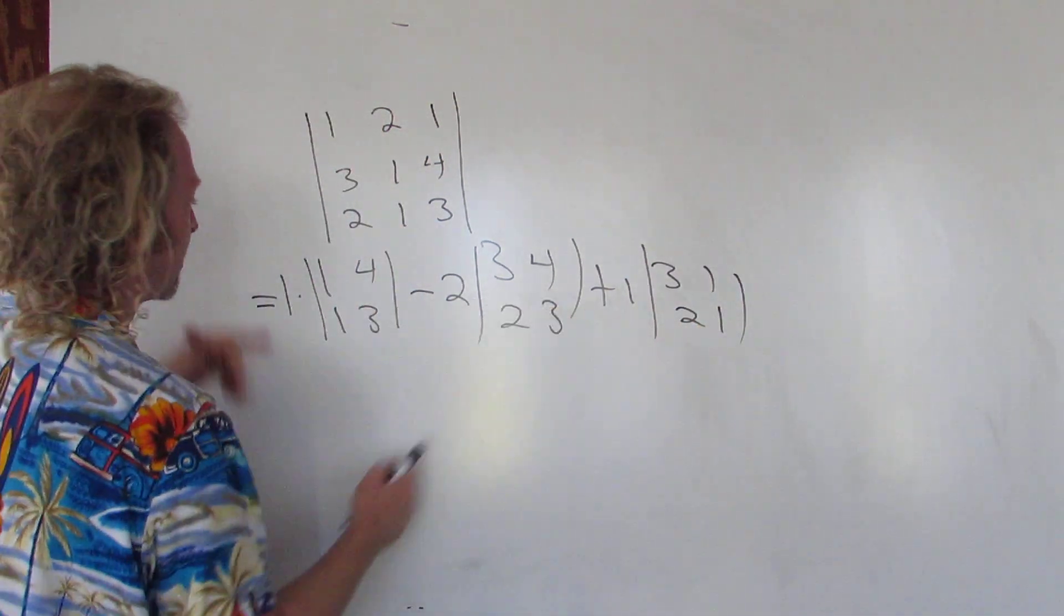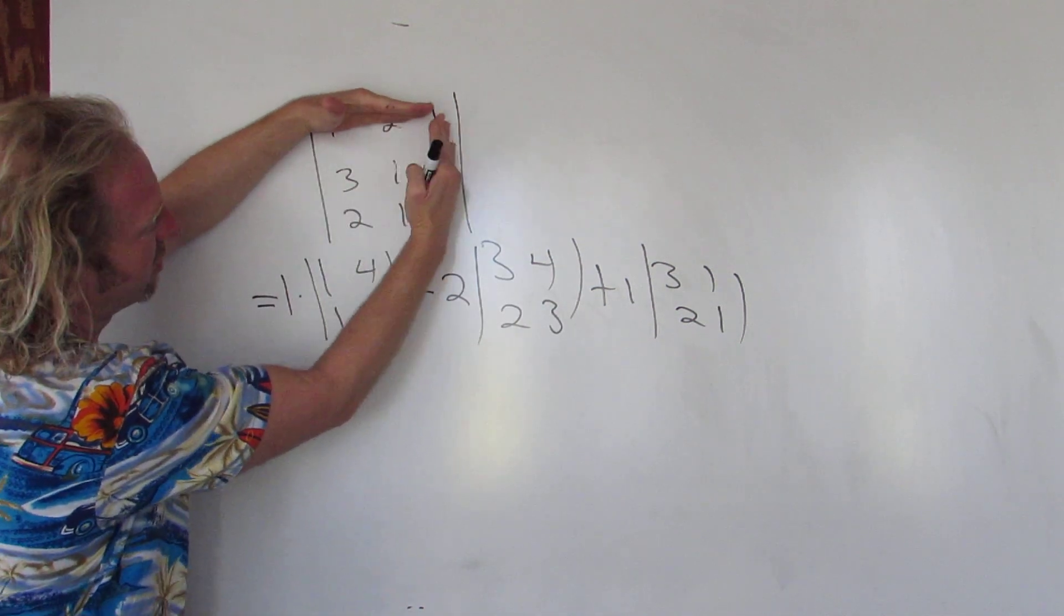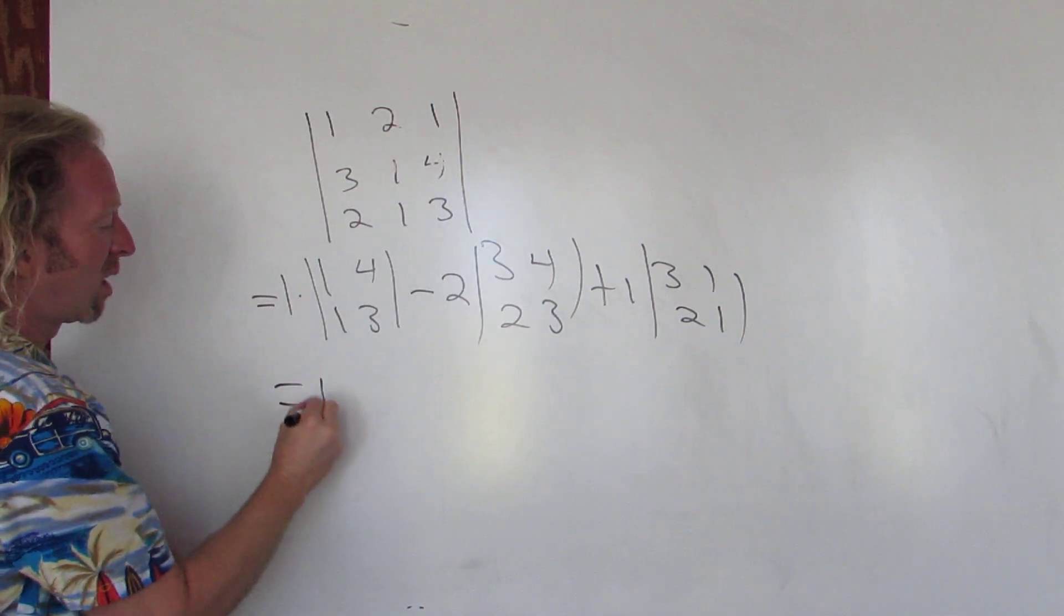So it's plus, minus, plus. And check it out: 1, 2, 1, 1, 2, 1. Cross it out: 1, 4, 1, 3. Cross it out: 3, 4, 2, 3. Cross it out: 3, 1, 2, 1.